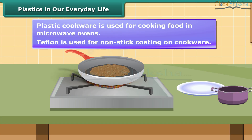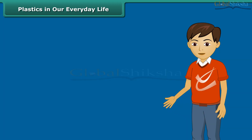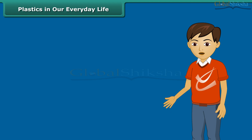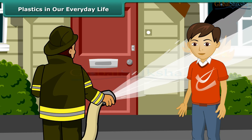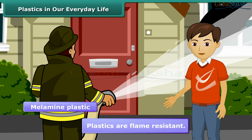Have you ever noticed the frying pan for cooking dosa? You would have seen a black coating on it. It is of Teflon, which is a special plastic on which oil and water do not stick, thus it is used as non-stick coating on cookware. You would be amazed to know that there are also fireproof plastics. The uniforms of firemen have a coating of melamine plastic to make them flame resistant.